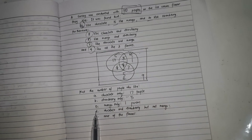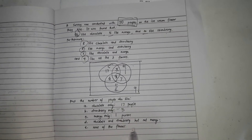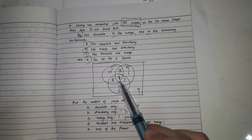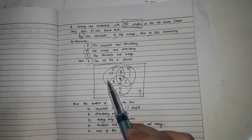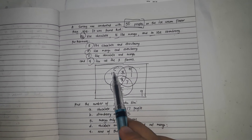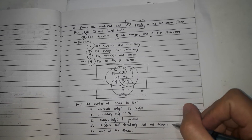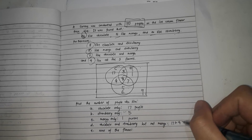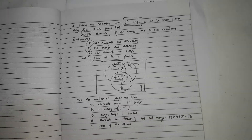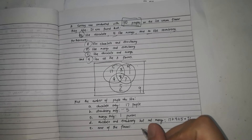Letter D, those who like chocolate and strawberry but not mango — they are inside chocolate and strawberry but not inside the mango circle. That is 4 people. Letter E, none of the flavors — those who do not like any of the three. That is 9 persons who do not like chocolate, mango, and strawberry.